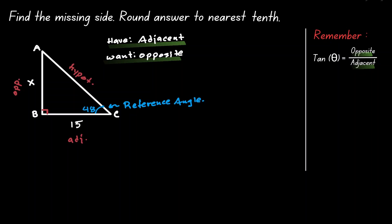So now it's a matter of just plugging in this information. If we evaluate tangent with our reference angle, the numerator in our ratio is the opposite, which we have as x, and the denominator in our ratio is the adjacent, which we have as 15.